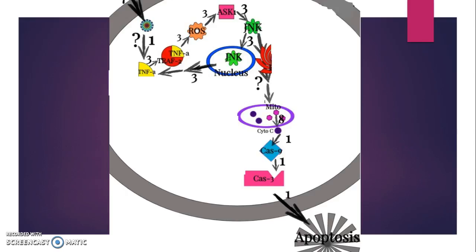JNK can then travel either to the nucleus, where it regulates TNF-α production, or to the mitochondria, where it initiates cytochrome C release. Cytosolic cytochrome C initiates the caspase 9 signaling cascade, ultimately resulting in caspase 3 activation, and thus apoptosis.